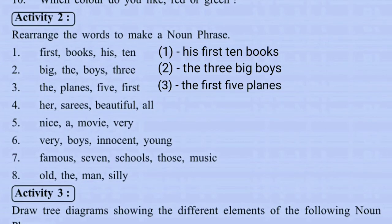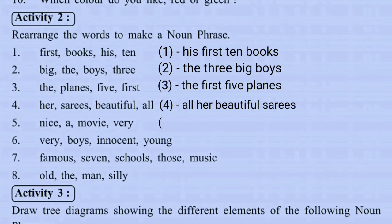For 'her', 'Shari's', 'beautiful', 'all' — the head noun is 'Shari's', so the noun phrase is: all our beautiful Shari's. For 'nice', 'a', 'movie', 'very' — the head noun is 'movie', so the noun phrase is: a very nice movie.